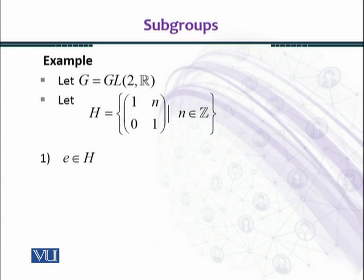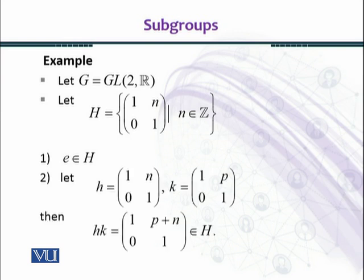Now we see that e belongs to H. The value of e is [[1, 0], [0, 1]], and we can choose the value of n = 0 since n belongs to set of integers. So the identity element is present in H.